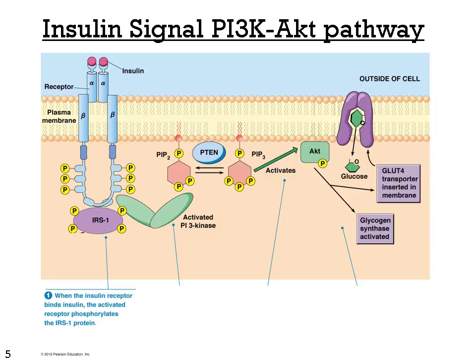We will now go over how the insulin signal propagates through the PI3 kinase-AKT pathway. Once insulin binds to the insulin receptor, this induces a conformational change that leads to autophosphorylation of the insulin receptor at tyrosine residues. This phosphorylation leads to the recruitment of insulin receptor substrate 1 (IRS-1), which then becomes phosphorylated.